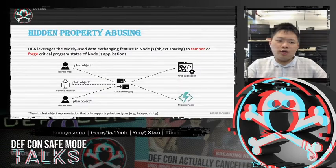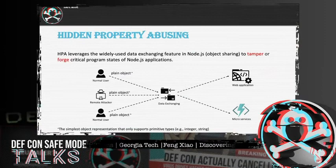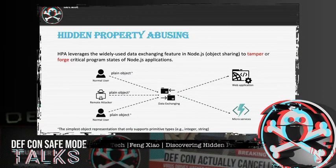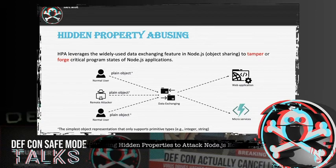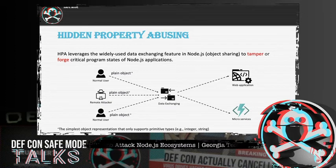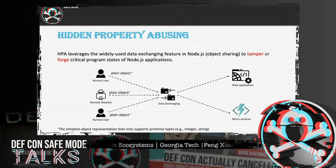So we are going to introduce Hidden Property Abusing, or HPA. Hidden Property Abusing leverages object sharing in Node.js to tamper or forge critical program states. We call the additional properties we inject "hidden properties" because these properties are like hidden parameters — valid to the endpoint user API and associated with certain internal program states. However, nobody knows of their existence until an attacker leverages HPA to tamper those states.